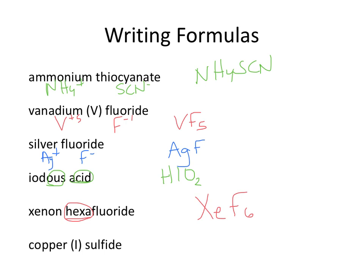The last one is copper(I), Cu plus 1. Sulfide, since it ends in -ide, is the single element sulfur with a minus 2 charge. I'll need 2 coppers to balance the sulfur, so that'll be Cu₂S.